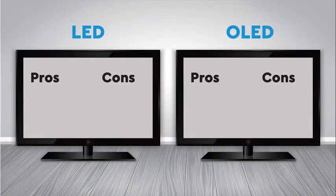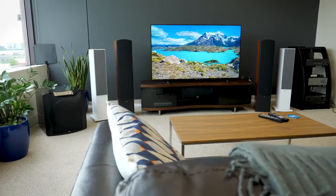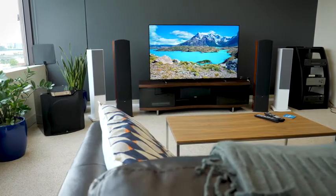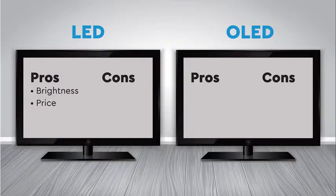So what are the advantages and disadvantages of each? LED TVs can get extremely bright — some can even get twice as bright as OLED TVs — and this makes them ideal for daytime viewing or when there's a lot of ambient light in the room. LED TVs are also less expensive to produce than OLED, so you'll find a wide range of prices and performance levels to choose from.